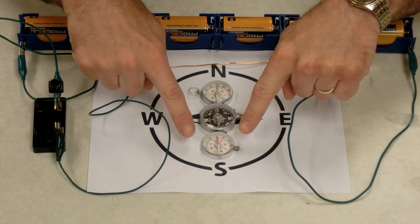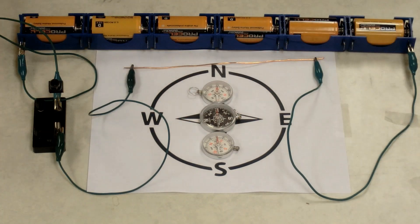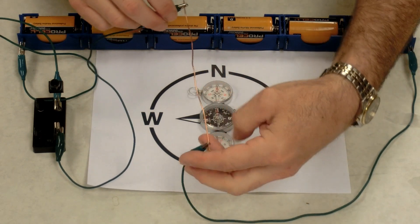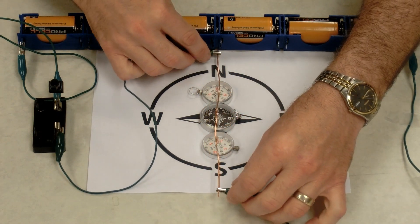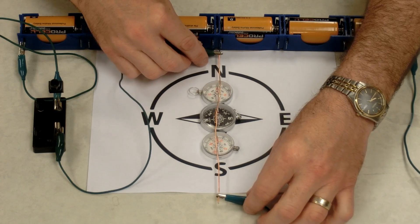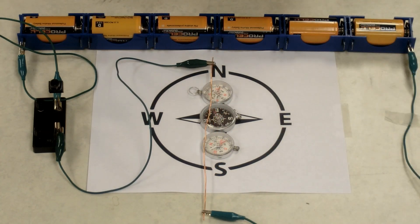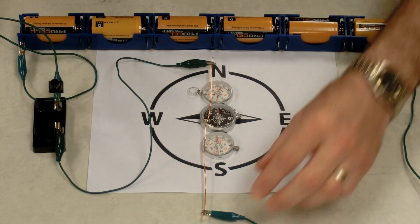Notice all three compass needles are facing north the way they normally do. If I take this wire and place it above the compass needles, in line with them, I'm going to use some tape to hold it down.